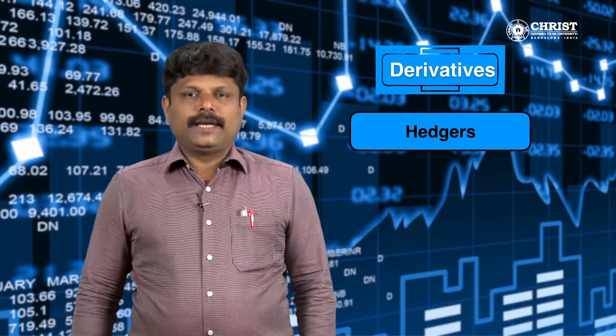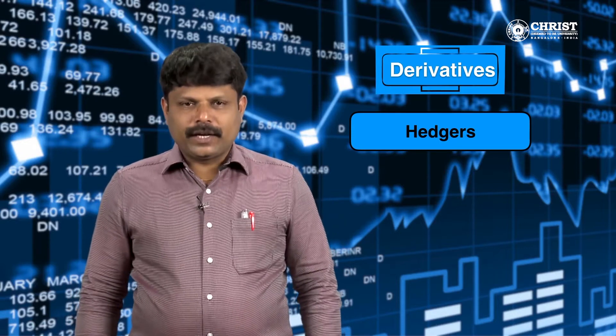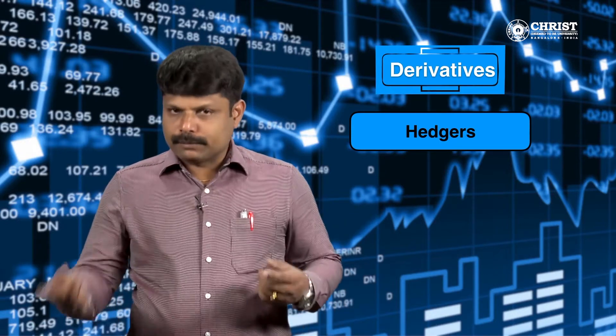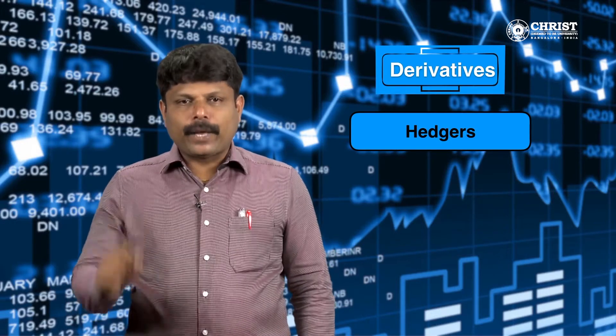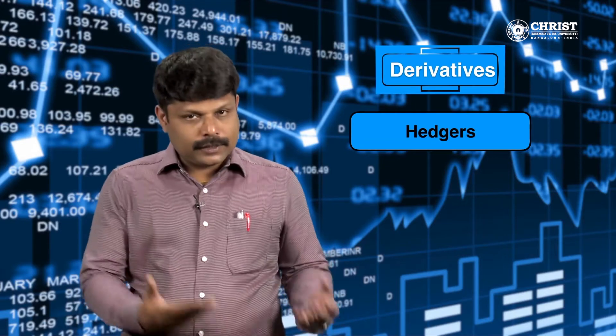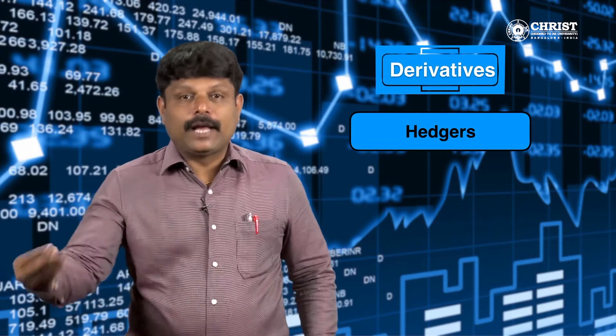They do this by assuming an opposite position in the derivative market, thereby transferring the risk of loss to others who are ready to take it. In return for the hedging available, they need to pay a premium to the risk taker. For example, when a trader has to pay 1 lakh dollars after 6 months and the current exchange rate is rupees 65 per US dollar, his liability after 6 months will be 65 lakhs.